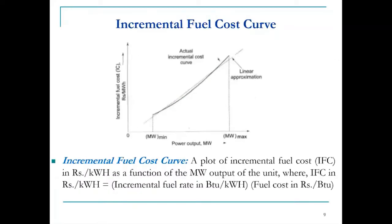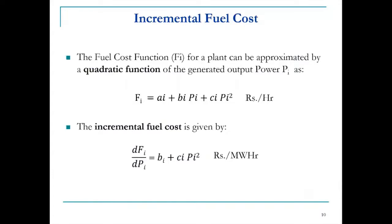The incremental fuel cost (IFC) curve is the plot of incremental fuel cost in rupees per kilowatt-hour as a function of power output in megawatt. IFC is obtained by multiplying the incremental fuel rate in BTU per kilowatt-hour by the fuel cost in rupees per BTU. The incremental fuel cost function for a plant can be approximated by a quadratic function.